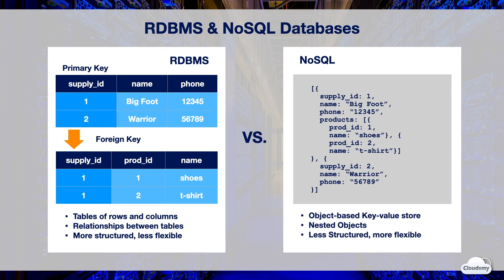NoSQL Database uses the object key-value store. Each record is regarded as an object which can have multiple key-value pairs and nested objects. In a relational database, different types of entities are stored in different tables, whereas in a NoSQL database, nested objects allow multiple entities and their relationships to be captured in one record. For example, here's a supplier table with supplier ID, name, contact information, and a nested list of products with product ID and name. Each supplier can have different structures of attributes. NoSQL Database is less structured than Relational Database — you don't need to define a fixed structure at the beginning. It is more flexible and scalable.